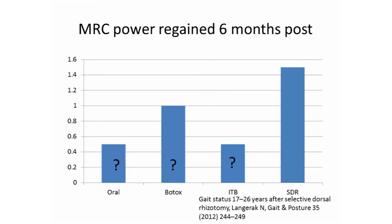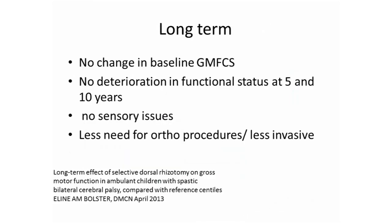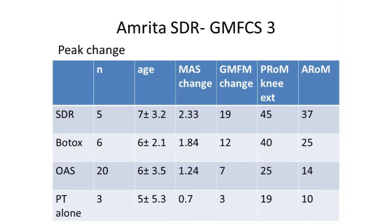Evidence shows the amount of power regained at six months post-SDR: patients can gain 1.5 MRC points. In the long term, there is no change in GMFCS, no deterioration in functional status at 5 and 10 years, no sensory issues, and less need for orthopedic and invasive procedures. Data from Amrita in GMFCS 3 patients over the past three years shows that with SDR, the change in modified Ashworth score, GMFM, passive and active range of movement are all much greater than with Botox, oral antispastics, or PT alone.